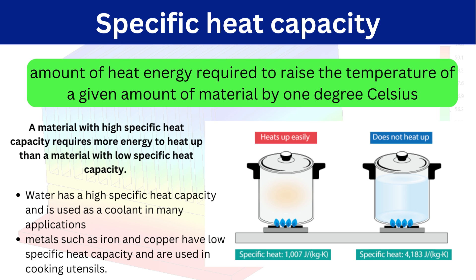If a material has higher specific heat capacity, it means more energy or heat is required to raise its temperature. Water has a high specific heat capacity and is used as a coolant in many applications because it requires more energy to raise its temperature. Metals such as iron and copper have lower specific heat capacity and are used in cooking utensils because we want the utensil to heat up easily.